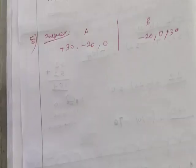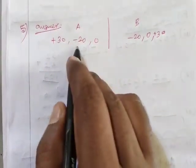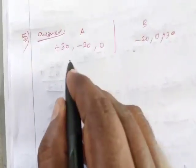Answer. Team A plus 30, minus 20, 0 and team B minus 20, 0, plus 30. Now here we add.